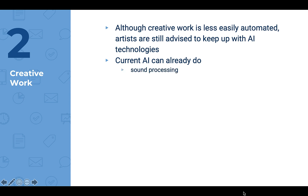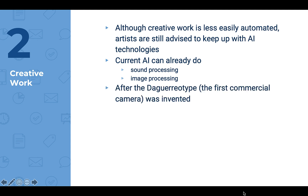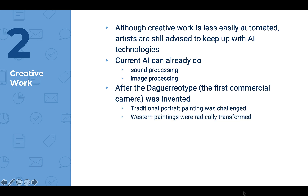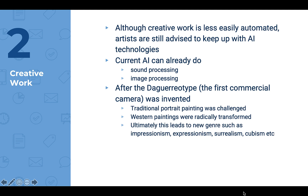AI can do sound processing as well as image processing. After the first daguerreotype — meaning the first commercial camera — was invented, traditional portrait painting was challenged and western paintings were radically transformed. Ultimately this led to new genres such as impressionism, expressionism, surrealism, and cubism. So this is not the first time that art has been challenged by technology.